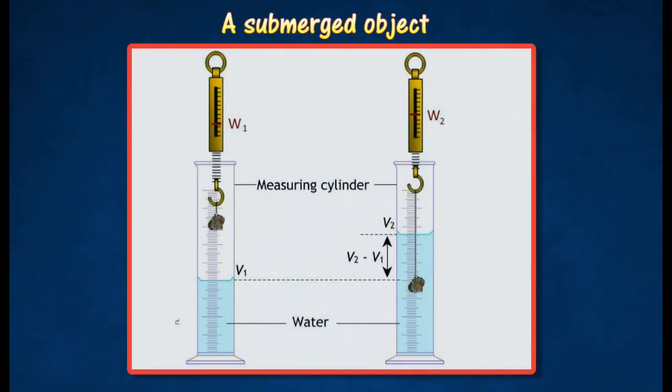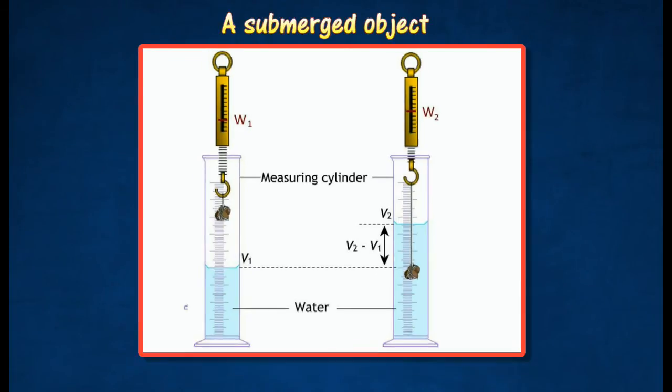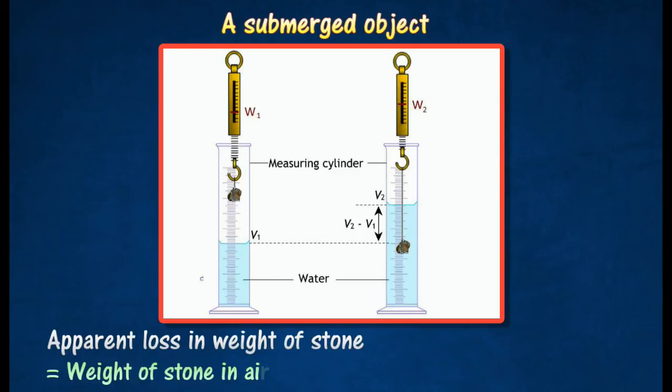When a piece of stone is lowered into the water, the water rises and the spring shows a reduction in weight. The weight of the stone in water, W2, is less than its weight in air, W1.